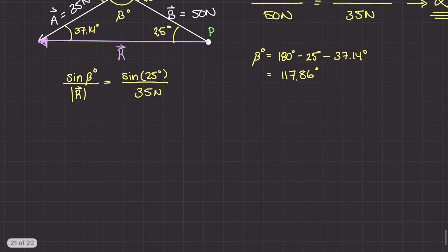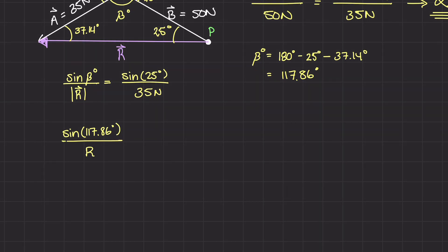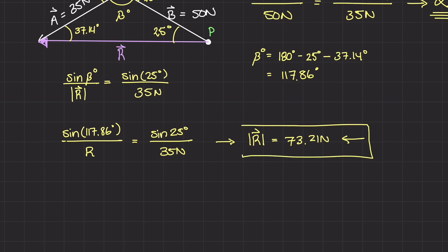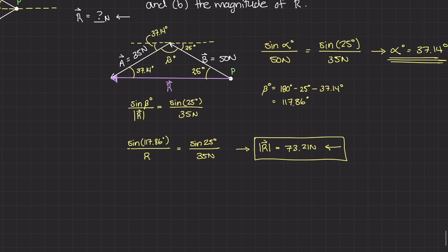Now, rewriting the equation: sine of 117.86 degrees divided by the magnitude of R equals sine of 25 degrees divided by 35 newtons. Solving this using our calculators, we get that the magnitude of this resultant vector R is equal to about 73.21 newtons, and this is acting exactly to the left. So the resultant R is 73.21 newtons.